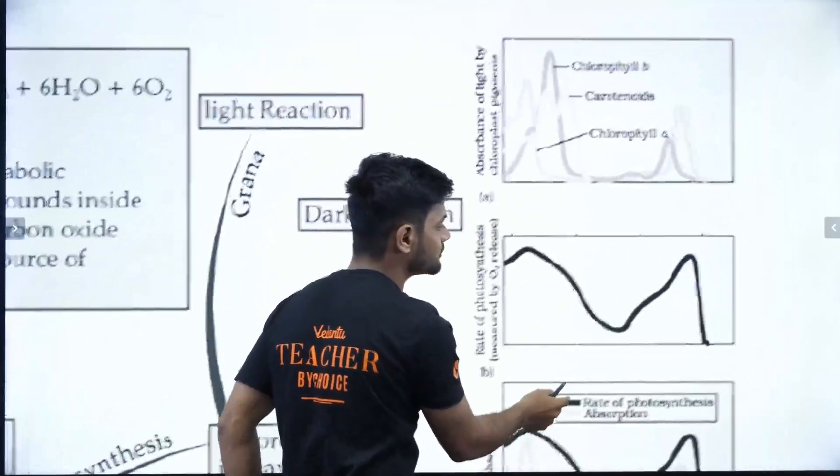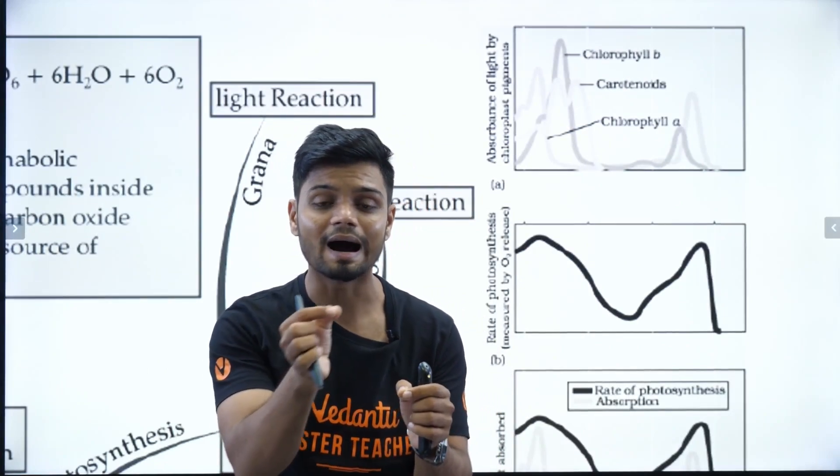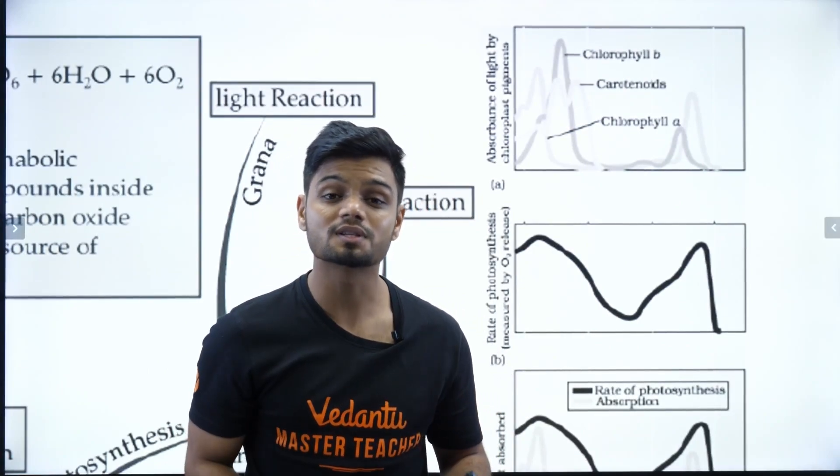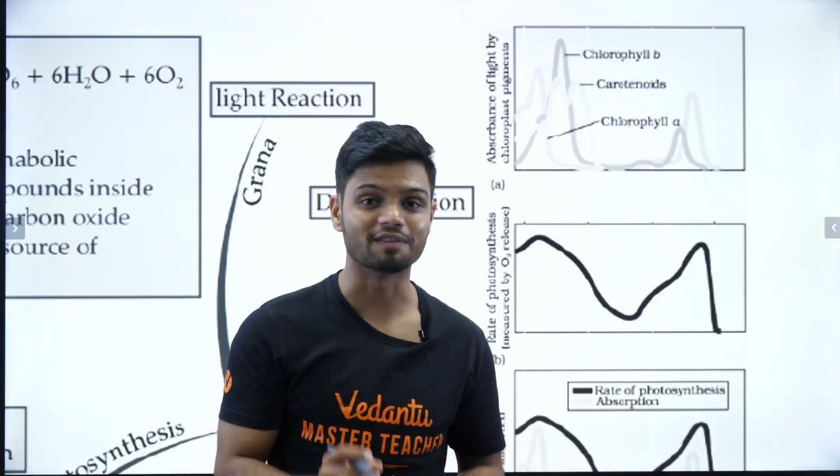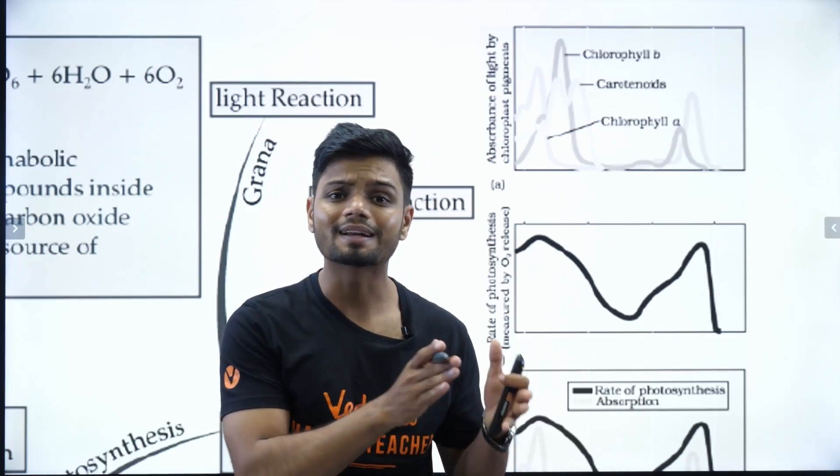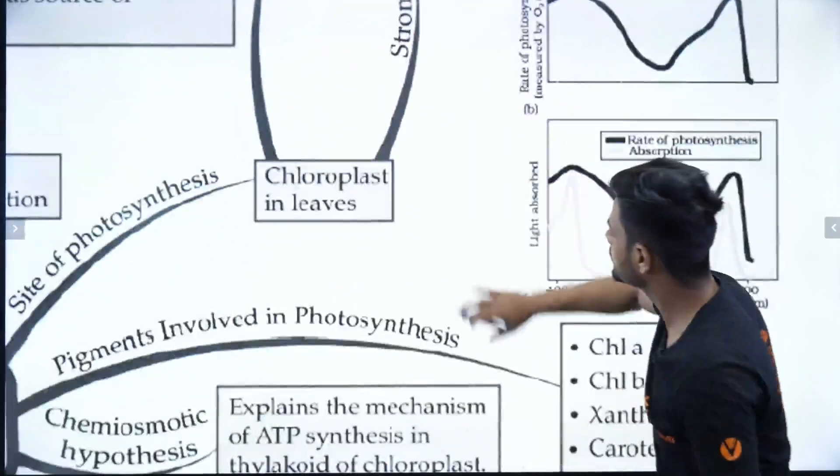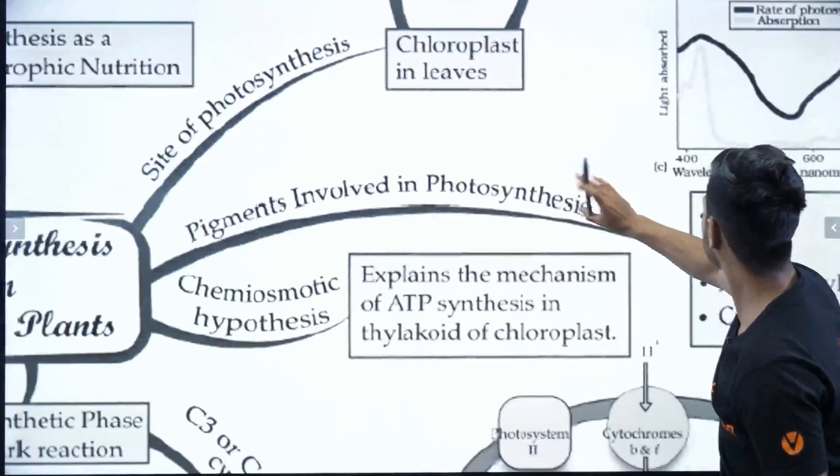Then we have action spectrum. Action spectrum shows us at what wavelength action is happening. What is the action here? Photosynthesis happening at which wavelength of light. And if you notice, there are two main regions. That is red region and blue region.